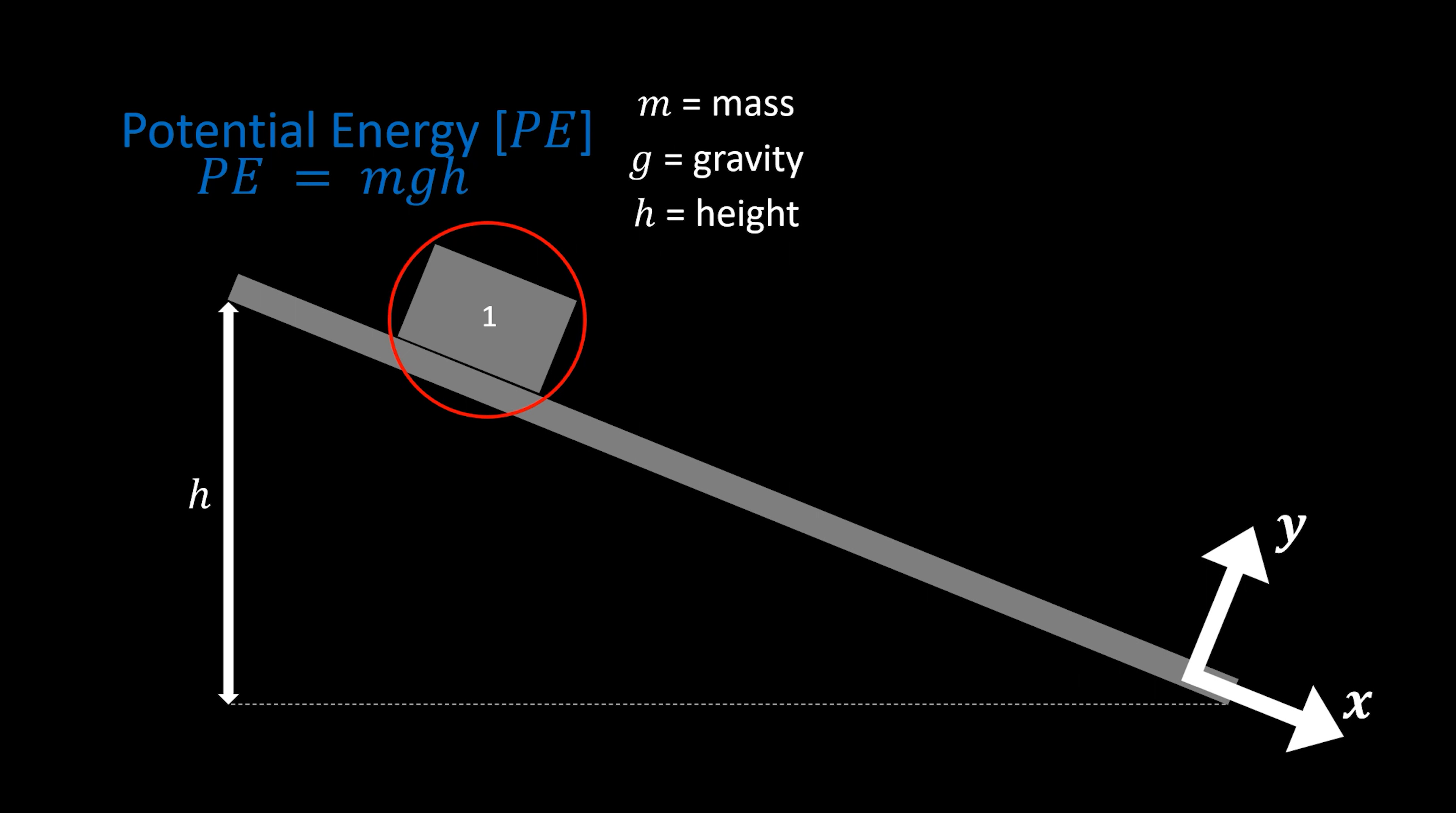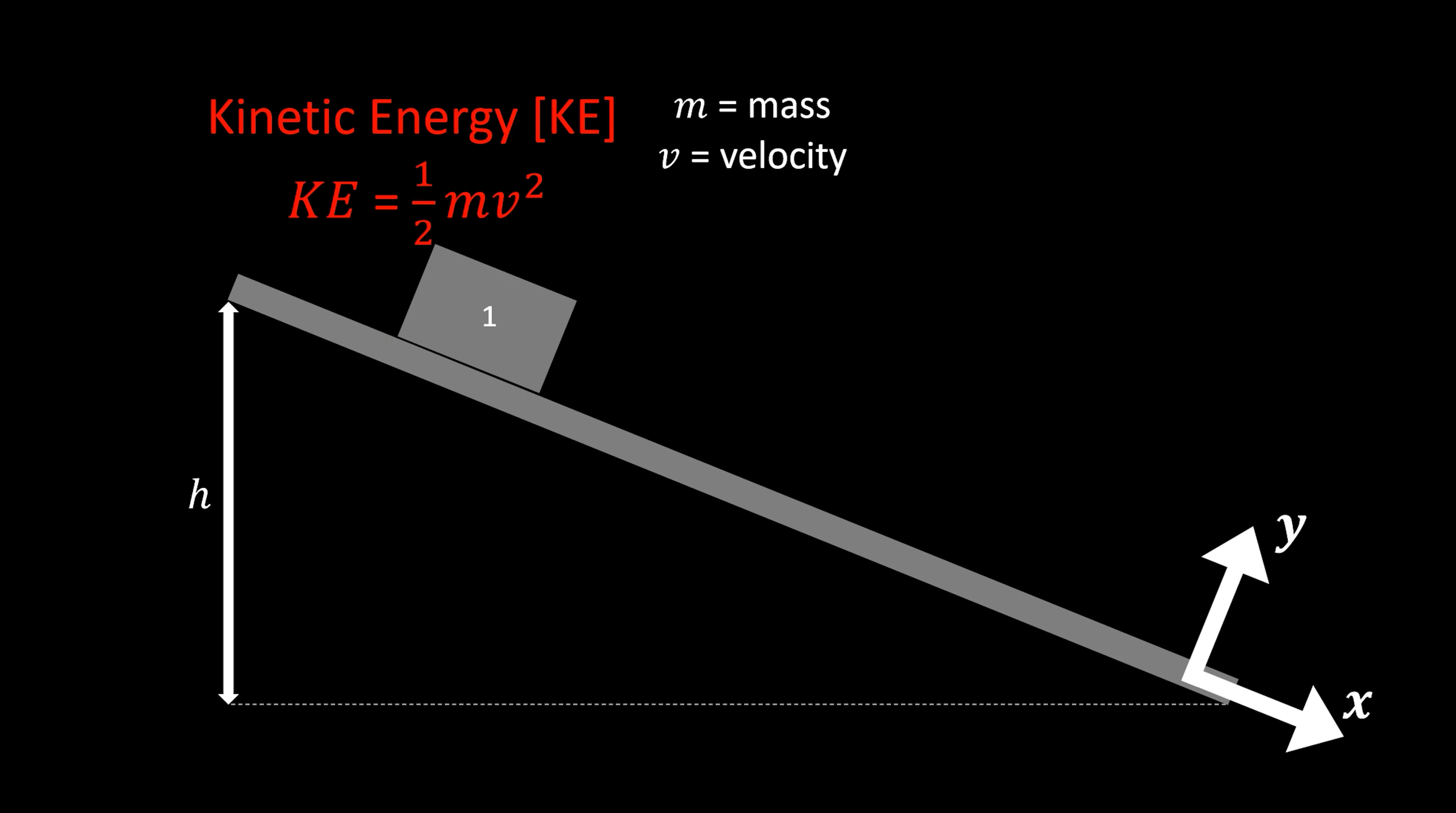All right, so the block with the most potential energy is going to be block one. In order to understand, we need to look at the potential energy equation again. Block one, two, and three all have the same mass and are affected by the same amount of gravity. But because block one was at a much higher height than the other two blocks, that's why it had the most potential energy.